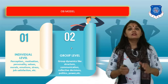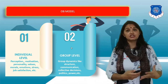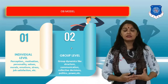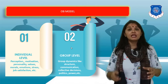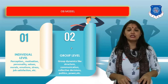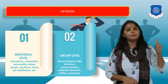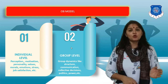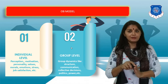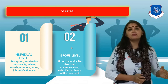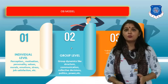The second OB model is the group level, which talks about group dynamics — the structure, communication within the group, collective decisions, politics within the group, power, who will lead, and who will become dominant. All these factors actually influence human behavior. The same person, when they go into a group, is influenced by the group presence and their behavior may change. So a person may behave in a certain manner alone, but when in a group the behavior may change. The second level of our study will be the group level.